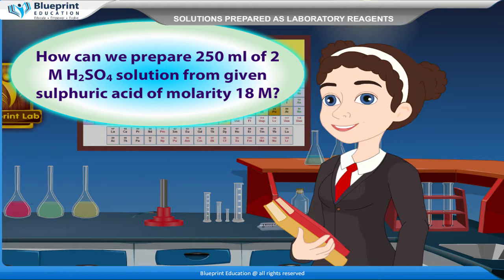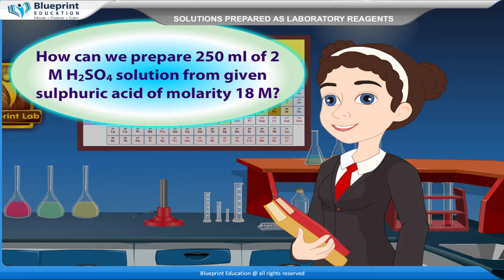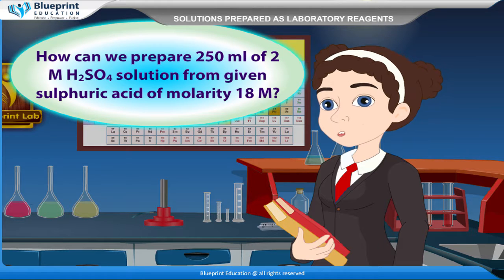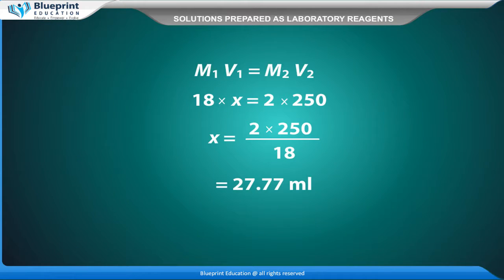How can we prepare 250 ml of 2M H2SO4 solution from given sulphuric acid of molarity 18M? By using the formula M1V1 = M2V2: 18 × x = 2 × 250, so x = (2 × 250) / 18 = 27.77 ml.